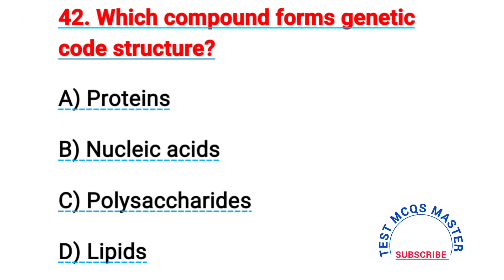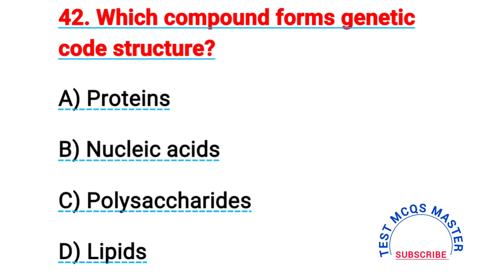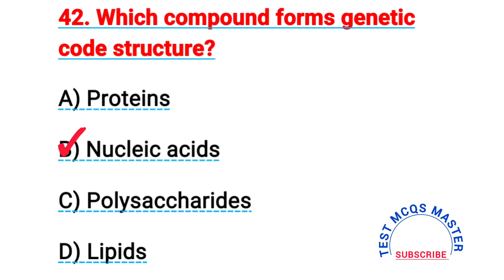Question number forty-two: which compound forms the genetic code structure? The right answer is B, nucleic acids.